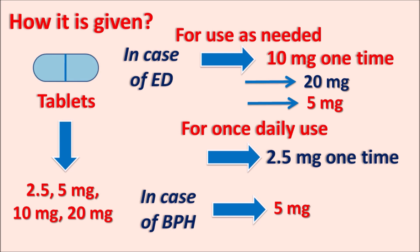Tadalafil should also be carefully given with other vasodilators like alpha blockers, beta blockers, calcium channel blockers, ACE inhibitors, and ARBs, as all these drugs produce vasodilation resulting in hypotensive effect. The main side effects are flushing, headache, dizziness, dyspepsia, diarrhea, cough, nasal congestion, nasopharyngitis, and sudden loss of hearing and vision. This drug is given at an initial dose of 10 mg for erectile dysfunction; as a once-daily dose, 2.5 mg once daily; and for treatment of BPH, 5 mg once daily.